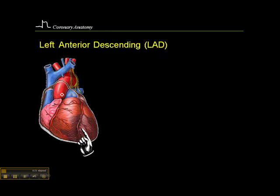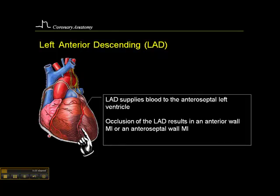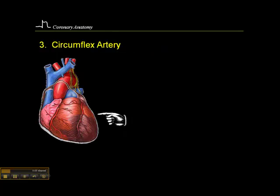The left anterior descending coronary — that's the finger pointing at it here — travels along the anterior surface. It supplies blood to the anterior septal left ventricle, the septal referring to the intraventricular septum that divides the right ventricle from the left ventricle. Occlusion of the LAD results in an anterior wall MI or an anterior septal wall MI, depending on how proximal the occlusion is.